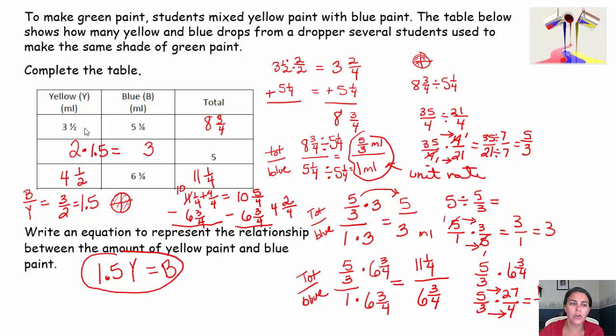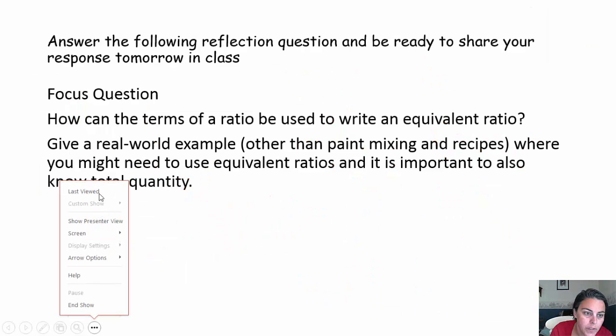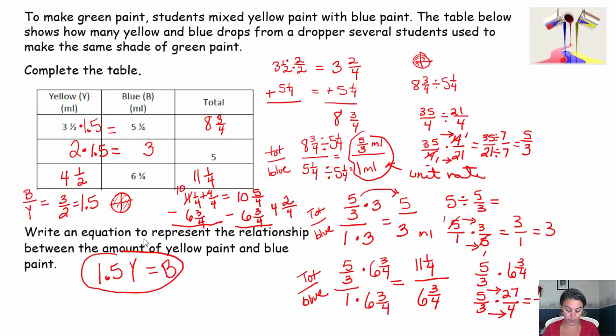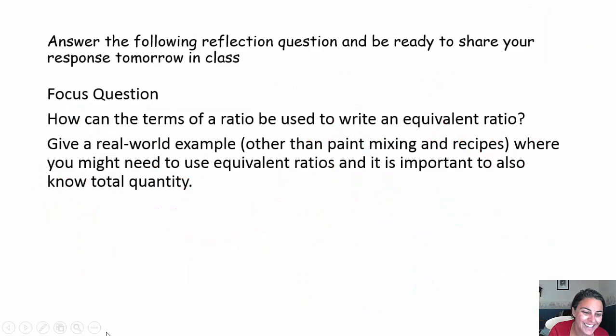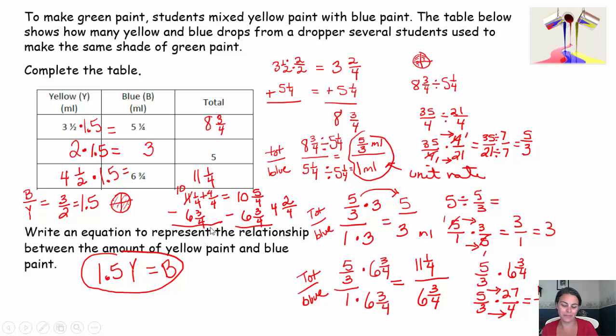Now let's just double check that this actually works. Let's take 3½ times 1.5. So 3½ is 3.5 times 1.5. Let's check that on the calculator. 3.5 times 1.5 is 5.25. 0.25 is a quarter, so 5¼. So that works out beautiful. Let's just double check that it works for this one also. 4½ times 1.5. Let's just double check. So let's do 4.5 times 1.5. 4.5 times 1.5, you come up with 6.75, which is 6¾. So this equation totally works.